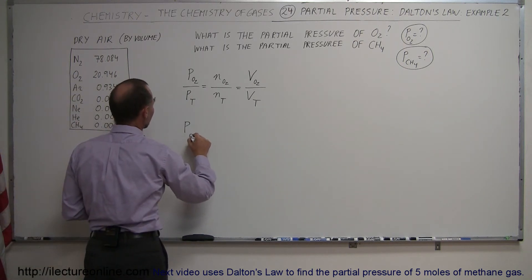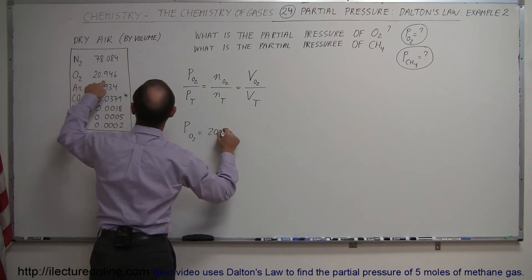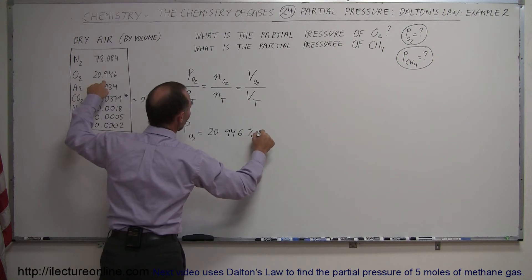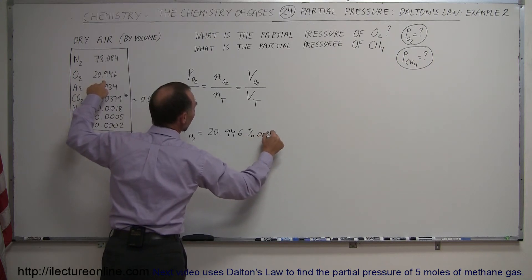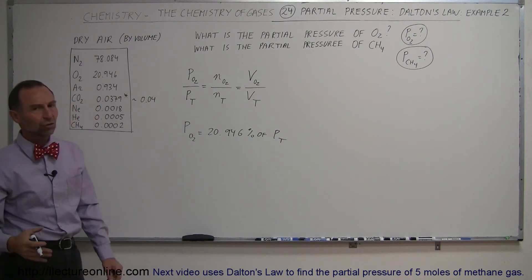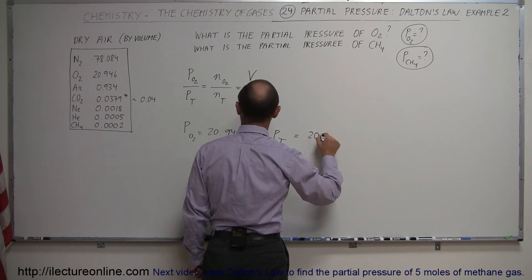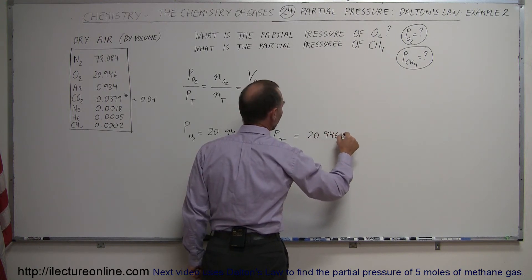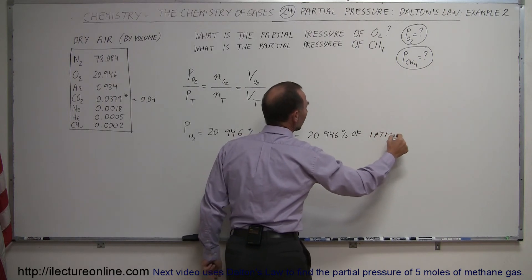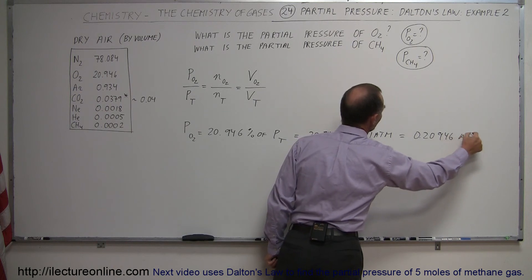That means the partial pressure of oxygen gas in the atmosphere would be equal to 20.946% of the total pressure. And since, at STP conditions, total pressure is 1 atmosphere, this would therefore be equal to 20.946% of 1 atmosphere, or this is equal to 0.20946 atmospheres.